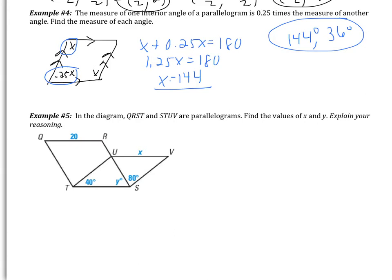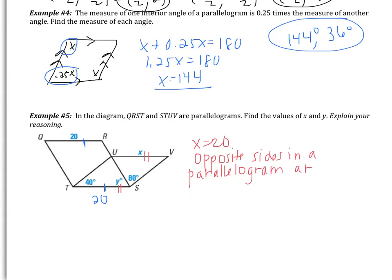Example five: QRST and STUV are parallelograms. Find the values of x and y. In a parallelogram, opposite sides are congruent, so QR is congruent to TS. Since QR is 20, TS is also 20. Looking at the right parallelogram, TS is congruent to UV (opposite sides). Therefore x equals 20. The reasoning is that opposite sides in a parallelogram are congruent.